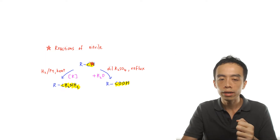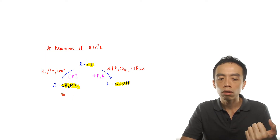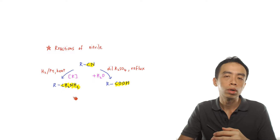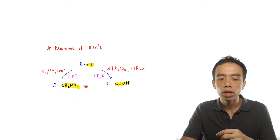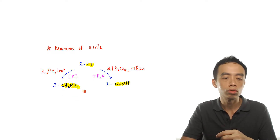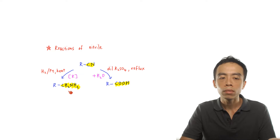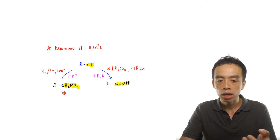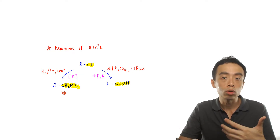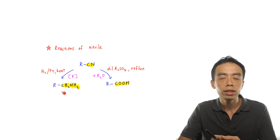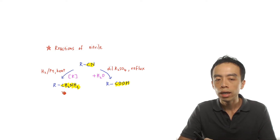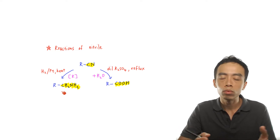If I have a CN group, what I can do is I can do a reduction. I can convert this to a primary amine, a CH₂NH₂ group. This conversion can be easily done using hydrogen with platinum catalyst and heat, or I can also use lithium aluminium hydride in dry ether followed by water at room temperature. Either one works fine.